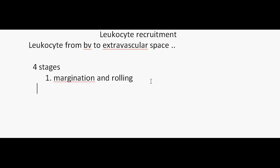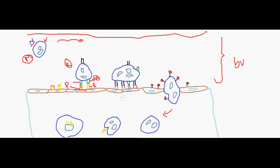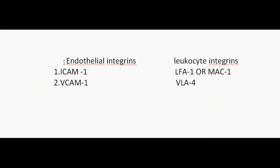In the second stage of leukocyte recruitment, there is adhesion — a strong interaction between the leukocyte and the endothelial surface. This adhesion is mediated by the integrin family. Whereas the selectin family mediated rolling, the integrin family is the main player in adhesion. Integrins are glycoproteins present on both the leukocyte and endothelial surfaces that mediate strong attachment.